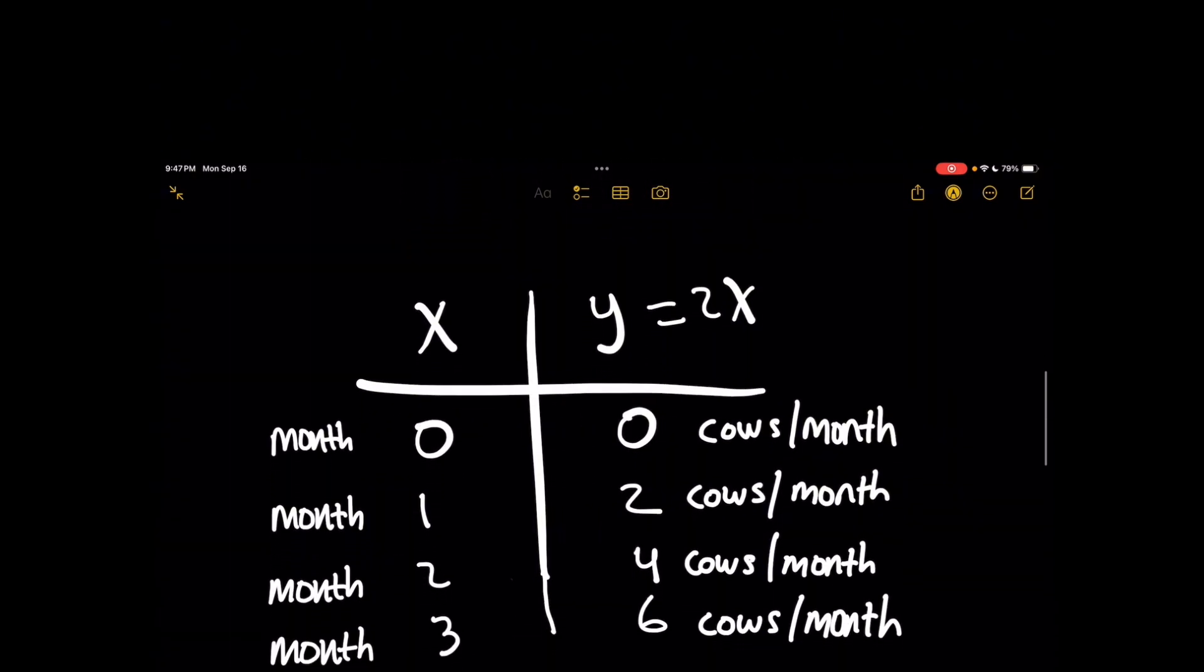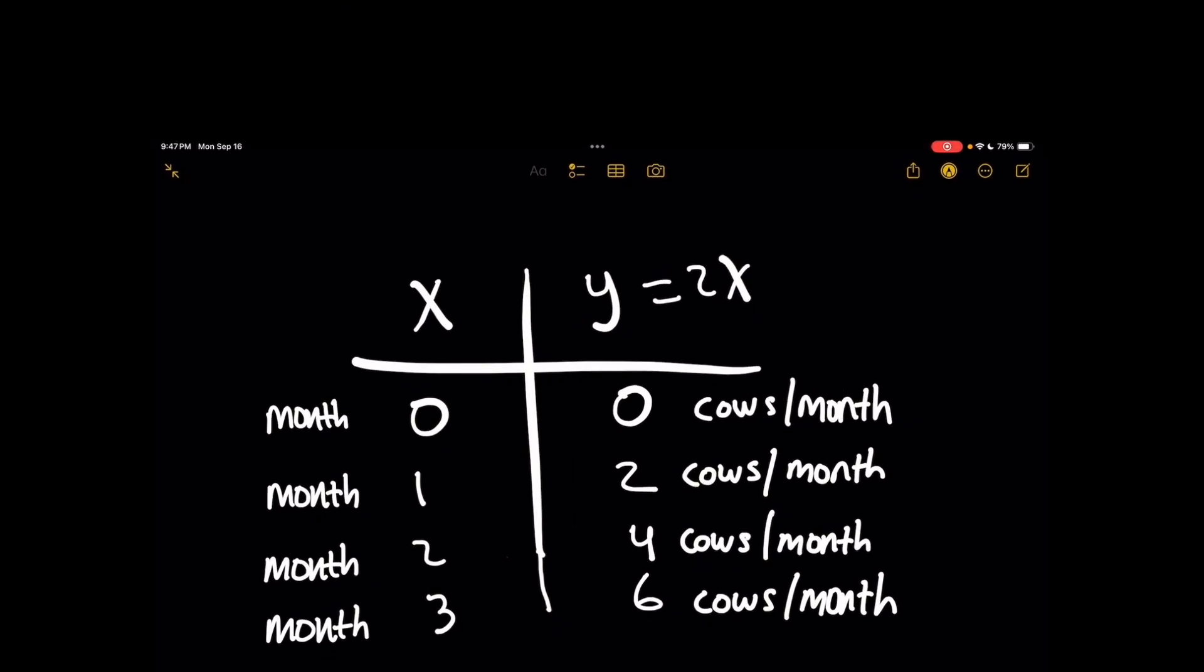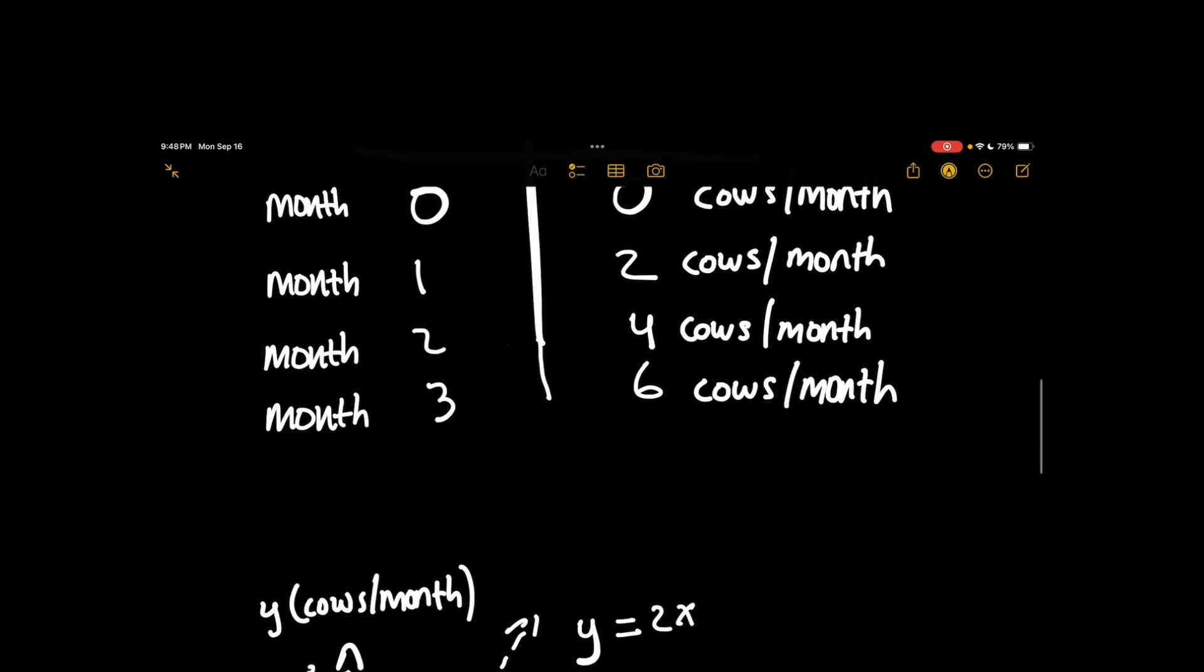Now, what we need to do is bring all the rates together, and after three months, we want to know how many cows were born. Let's start with this table. Because we have the equation y equals 2x, x is denoted by the month number, and the unit here is really important. Y is taking the value in the left column for x and simply multiplying it by 2 to get the rate after that month number.